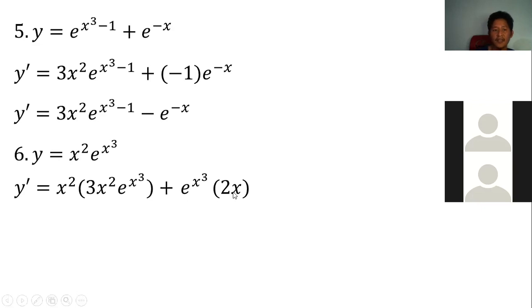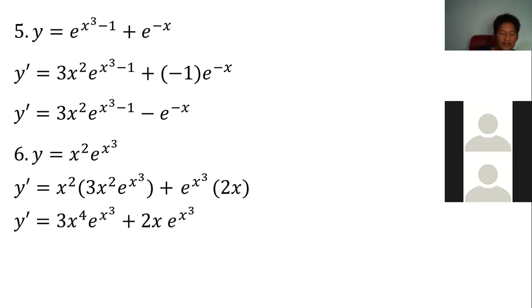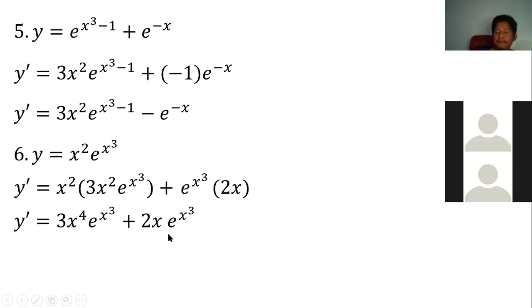Simplify: x squared times x squared gives x to the 4. Same base, so we combine. That gives our final simplified result.